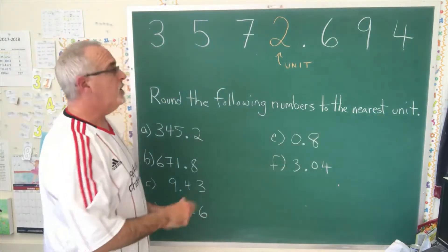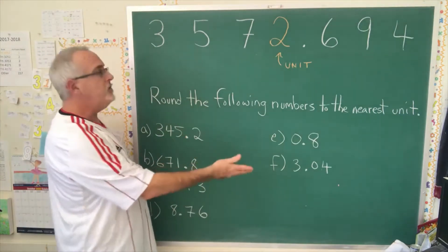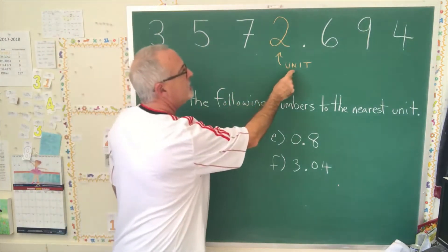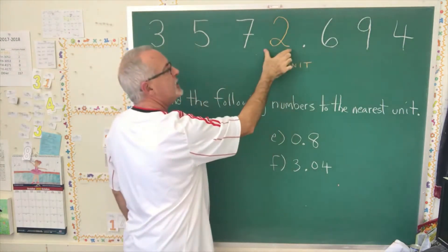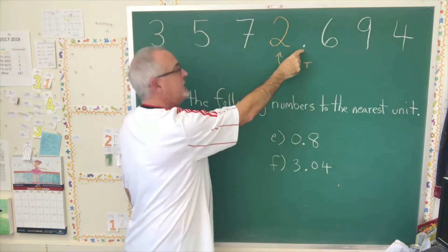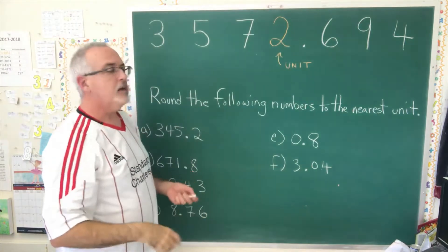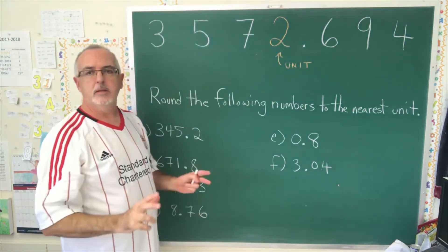We have to know what is meant by the word unit. The unit position in a number is the digit that is immediately to the left of the decimal. The unit is also sometimes referred to as the ones position.